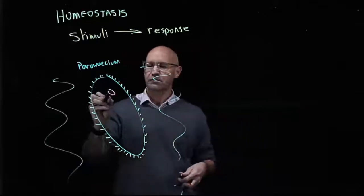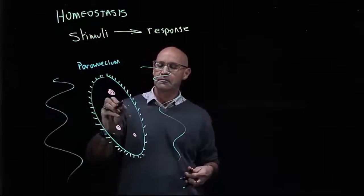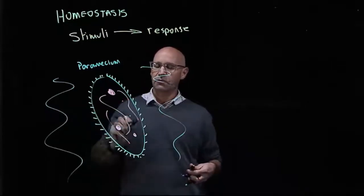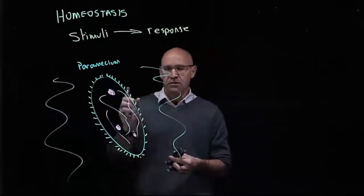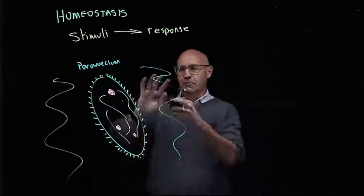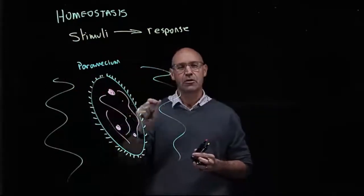Because it's only a single-celled organism, it's very simple. It does have organelles, but it's only one cell, so there's no specialization. The only thing that separates it from the external environment is this thin cell membrane.